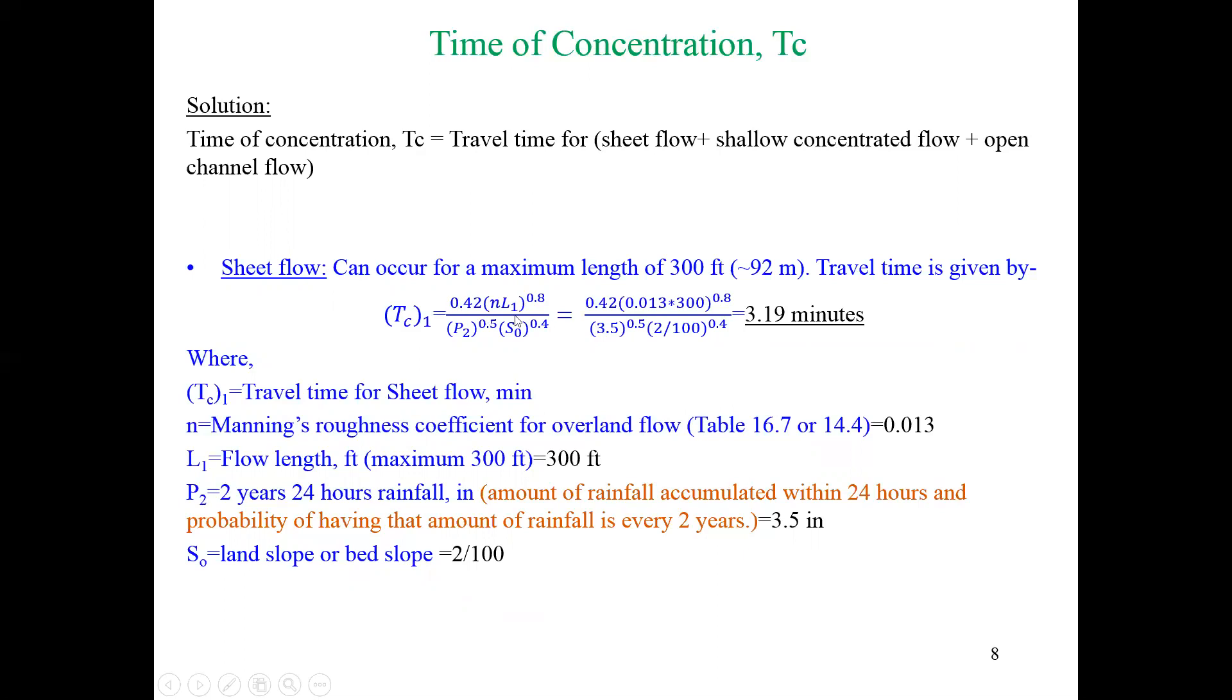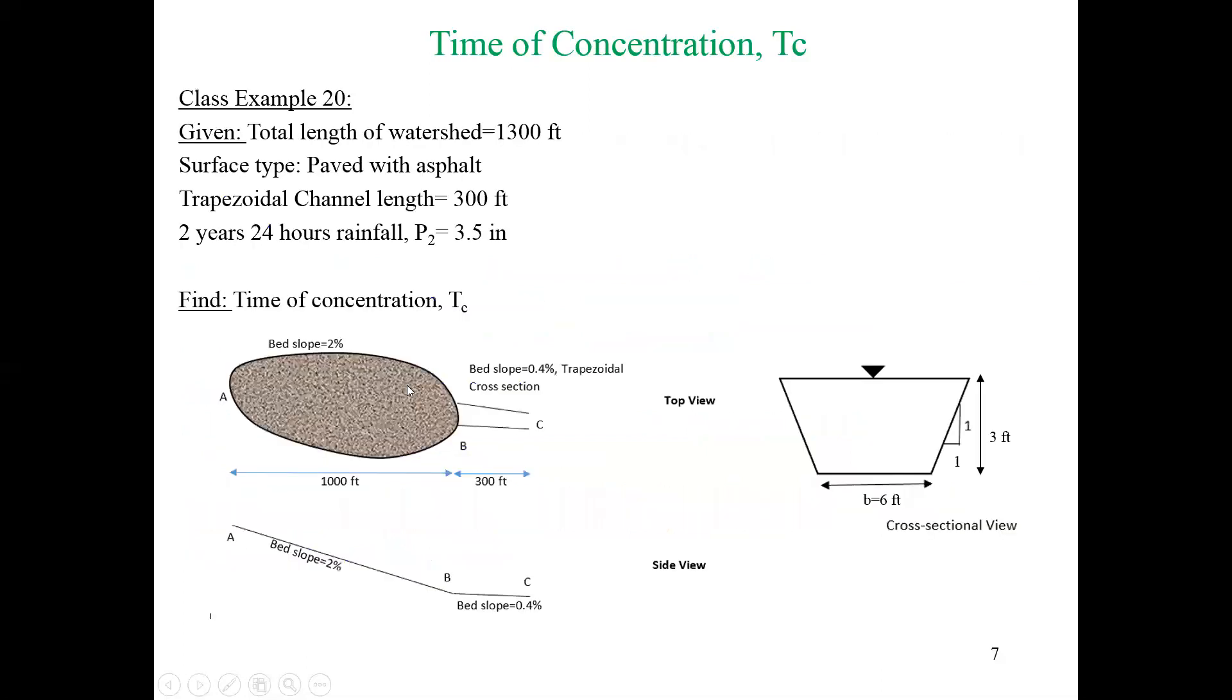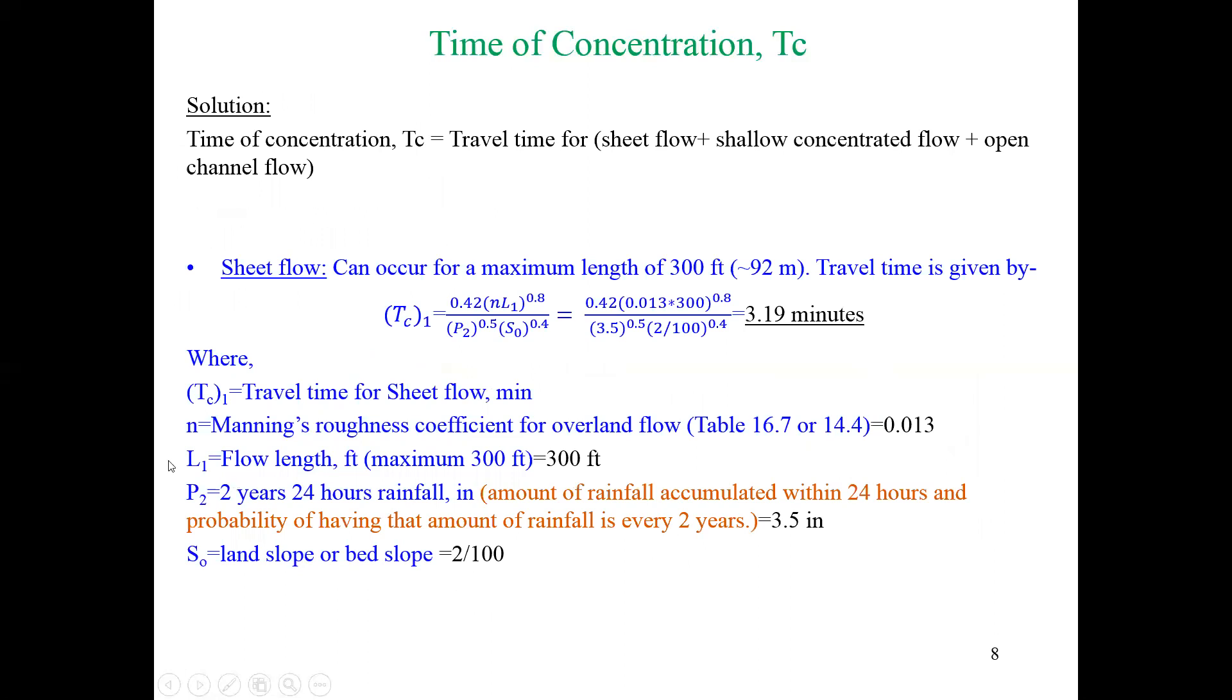Now we have to find n, L1, P2, and S0. P2 was actually 2-year 24-hour rainfall in inches, so that was given as 3.5 inches. S0 was bed slope which was 2 percent, so that is given as well. For L1, we know that sheet flow can occur for a maximum length of 300 feet. The watershed was 1000 feet; out of this 1000 feet, up to 300 feet we can get sheet flow. If the watershed was less than 300 feet, we would take the whole length as the length for sheet flow—there would maybe be no shallow concentrated flow.